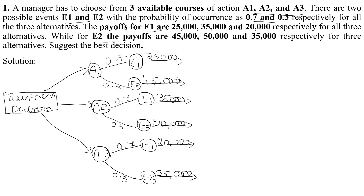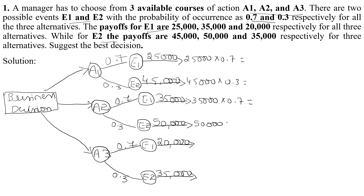To find the expected monetary value, simply multiply the probability by the payoff value. For A1: 0.7 multiplied by 25,000, plus 0.3 multiplied by 45,000. For A2: 0.7 multiplied by 35,000, plus 0.3 multiplied by 50,000. For A3: 0.7 multiplied by 20,000, plus 0.3 multiplied by 35,000. Do the same for each alternative and add both products to get the total.